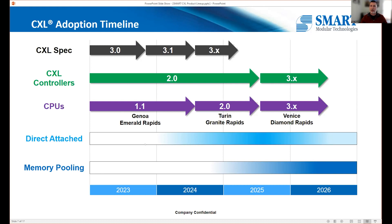We see two ramps occurring in the industry. The first ramp — direct-attached devices — is starting this year; they're available now and being integrated into production systems. We see the second ramp kicking off once the 3.0 spec becomes widely available next year. But the direct-attached and memory pooling will coexist, working together side-by-side in the ecosystem.